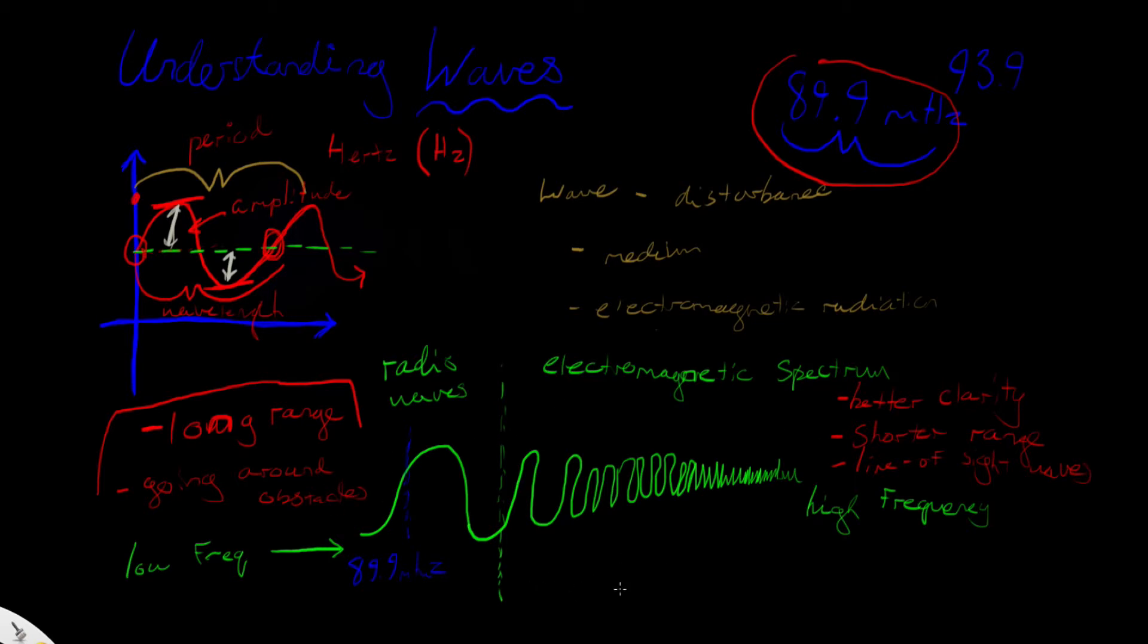So the high frequency waves work best when the transmitter and the receiver of the wave are in direct contact. There's nothing that the wave has to go through. So I'm going to continue on with the kind of waves we see in our electromagnetic spectrum. So we talked about radio stations that we listen to in your car and whatnot.